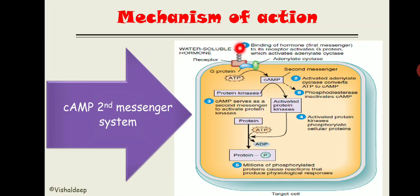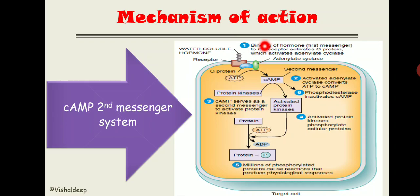Once parathyroid hormone binds with the extracellular domain, the intracellular domain undergoes conformational changes and binds with the G-protein. This G-protein has three subunits: alpha, beta, and gamma. The alpha subunit detaches from beta and gamma, becomes attached to GTP, and gets energized. It then binds with the adenyl cyclase enzyme.